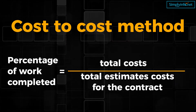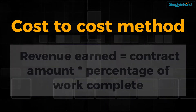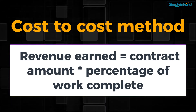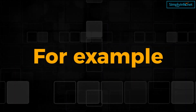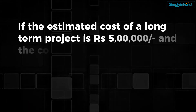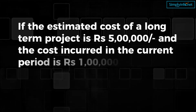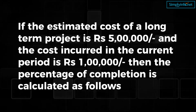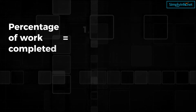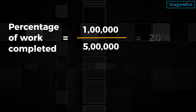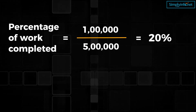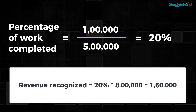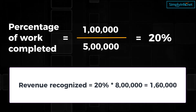The value is then applied to determine the total revenue for the project. Revenue earned = Contract amount × Percentage of work complete. For example, if the estimated cost of a long-term project is rupees 5 lakh and the cost incurred in the current period is rupees 1 lakh, then the percentage of completion = 1 lakh ÷ 5 lakh = 20%. If the estimated revenue of the project is rupees 8 lakh, the revenue recognized = 20% × 8 lakh = 1.6 lakh.